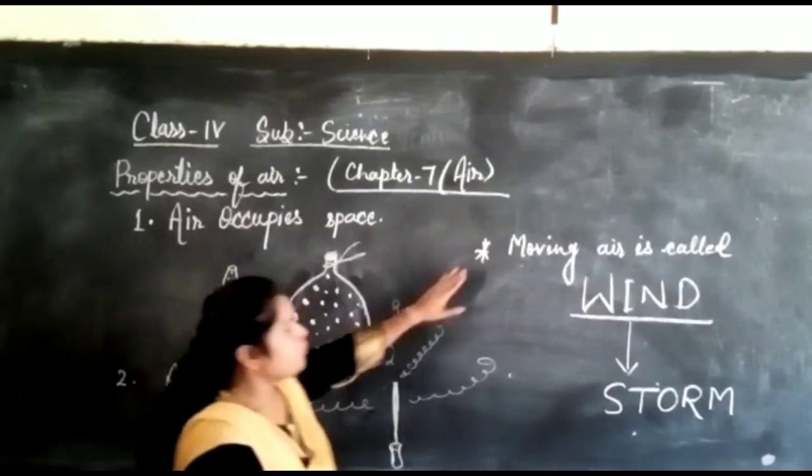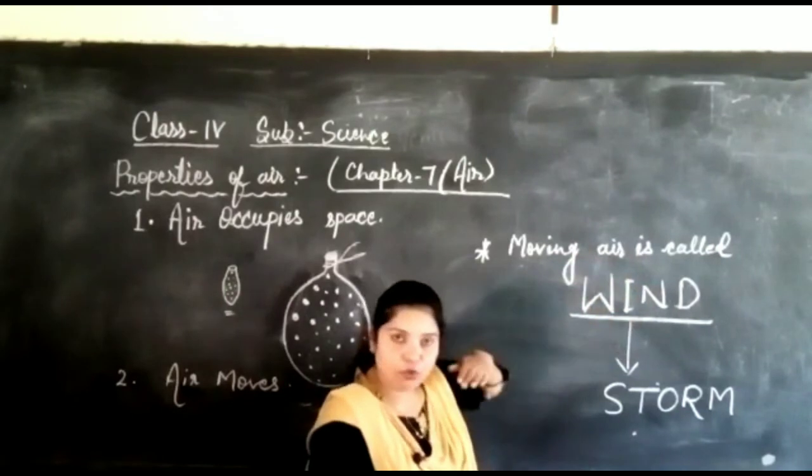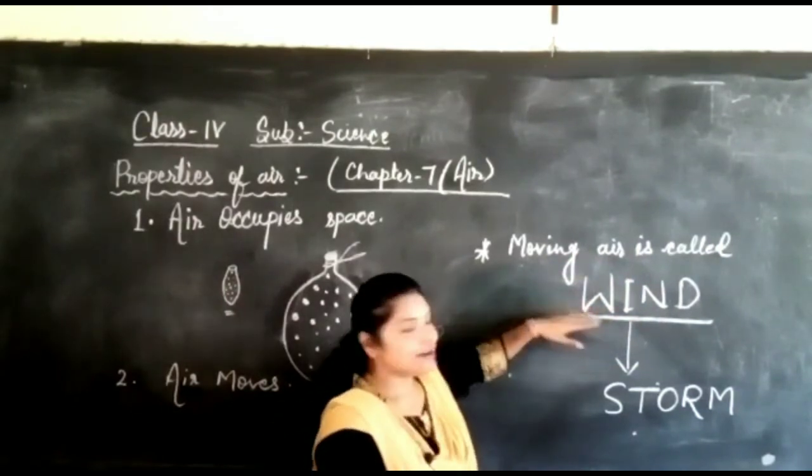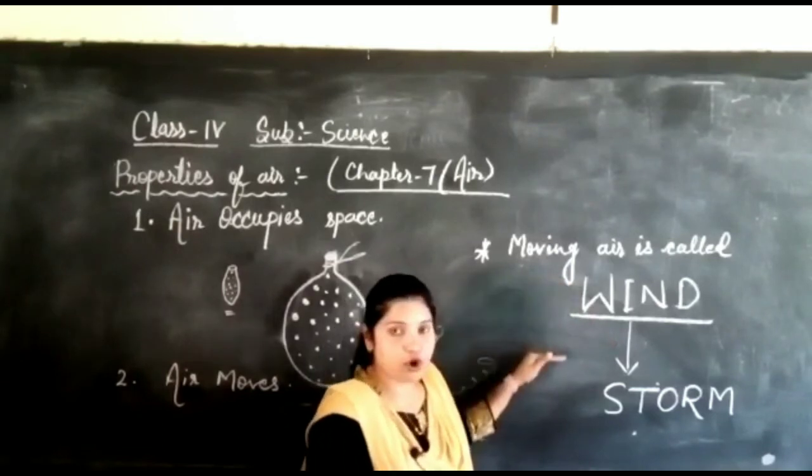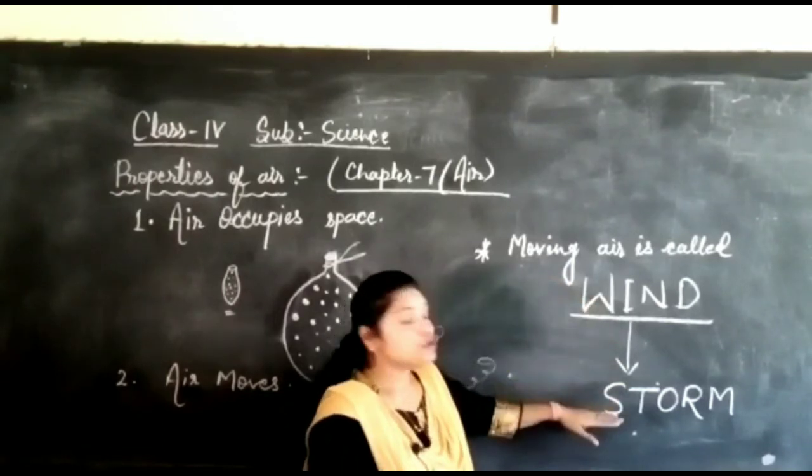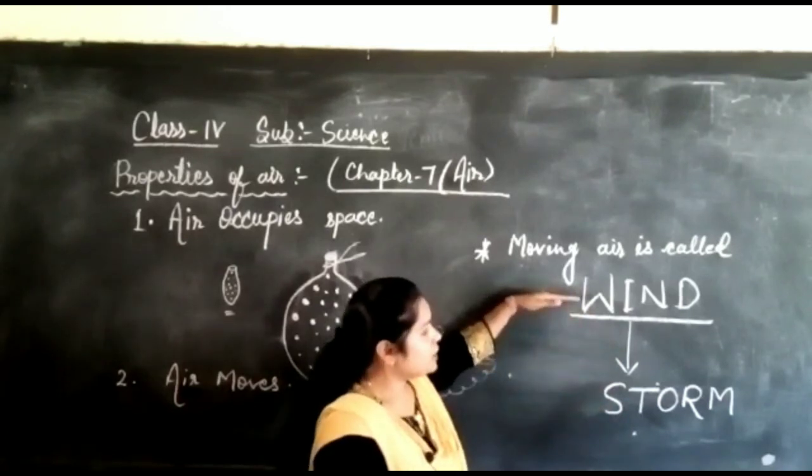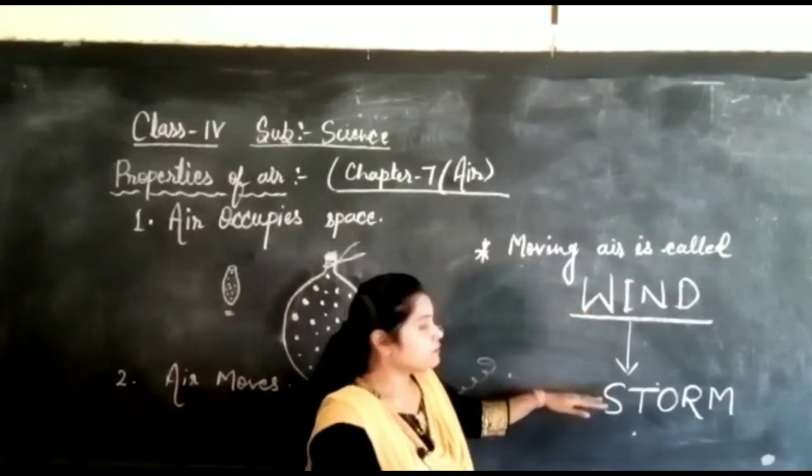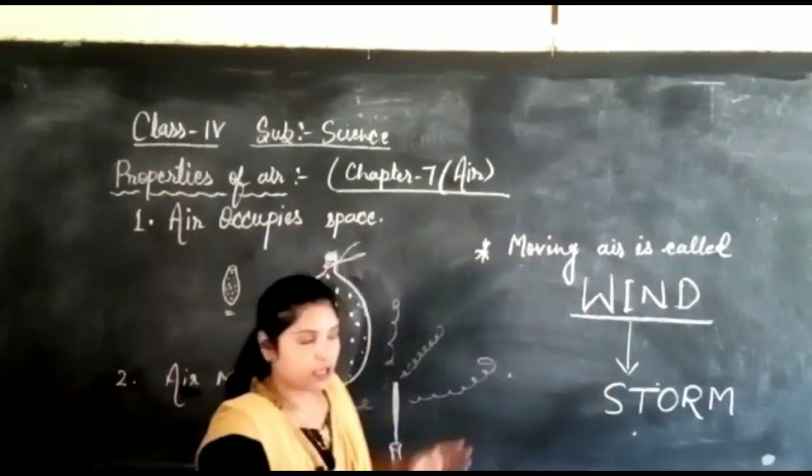Now moving air is called wind. When air moves, it is called wind. And when the wind is very strong, then it is converted into storm. When wind is strong, then it is converted into storm. So this is the property of air.